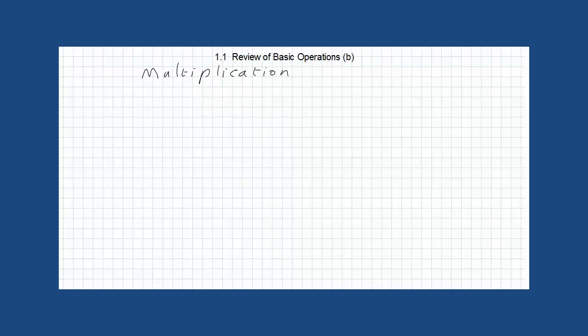Multiplication, we use some symbols to denote this operation. These symbols, this cross, or just a large dot, or a star like in computers, or sometimes we don't use any symbol but just put the two numbers between parentheses without a symbol between them.